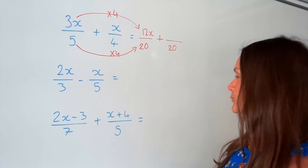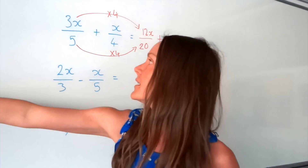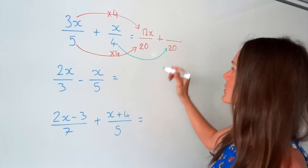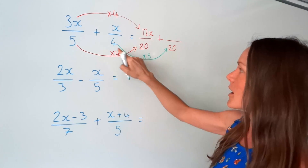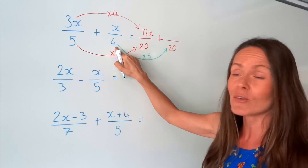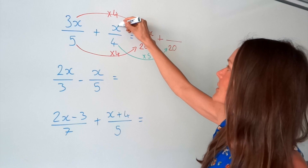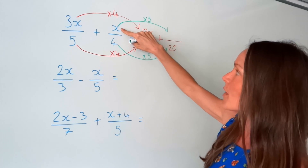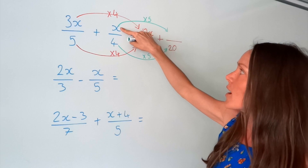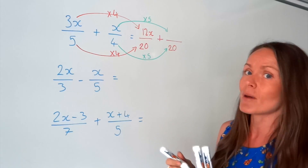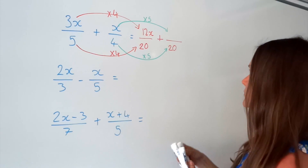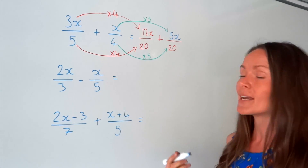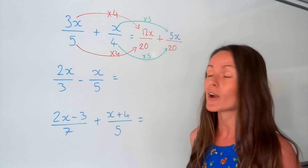So let's look at the next one. In this example, we were changing 4 to 20, so this time we multiplied that number by 5. So you have to do exactly the same thing with the numerator and multiply that by 5 as well. So x multiplied by 5 is just 5x. Now that I've got the common denominators, I'm allowed to add the two fractions together.